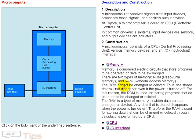The RAM is a type of memory in which data can be changed or deleted. Any data that is stored disappears when the power is turned off. Therefore, the RAM is used for storing data that can be changed or deleted through calculations performed by a CPU.